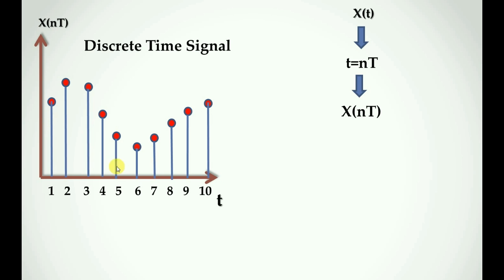In this case we have the value of capital T equal to 1 second per sample. So when we replace capital T with 1 second, we have x(n). Here n is an integer value — that means 1, 2, 3, 4, 5, 6, 7, 8, 9, 10 — and x(n) represents the discrete signal.